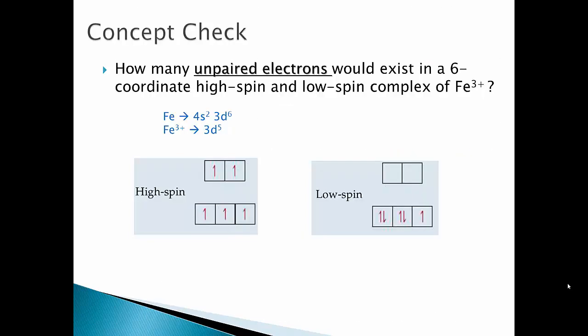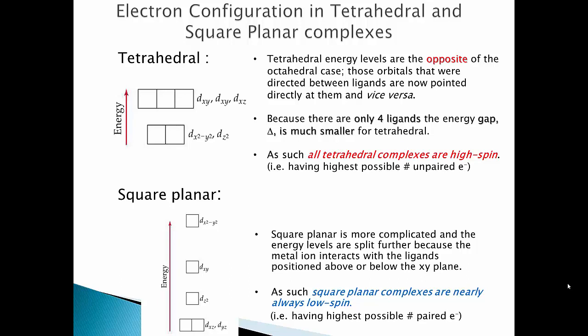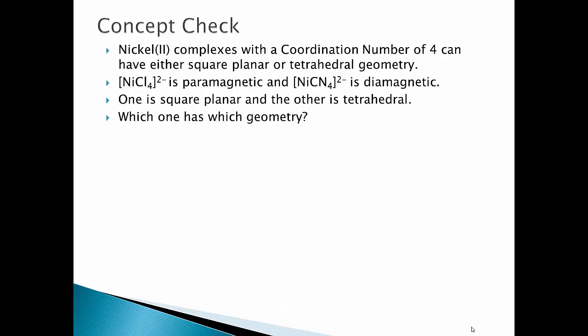Tetrahedral and square planar complexes differ from octahedral. In tetrahedral geometry the splitting is reversed: the eg set is at the bottom and the t2g set is at the top, because the ligand positions have swapped relative to octahedral. Square planar splitting is more complex, with the D orbitals spread into multiple levels: two t2g orbitals low, then one t2g, then one eg, then the dx²−y² orbital highest.